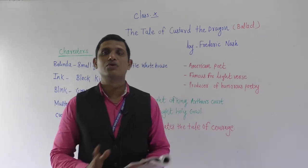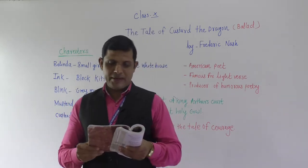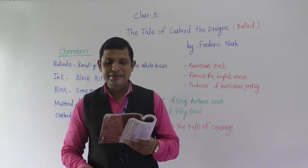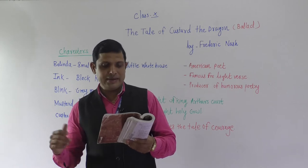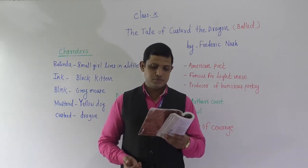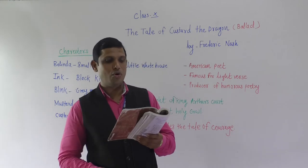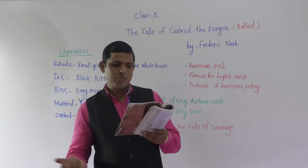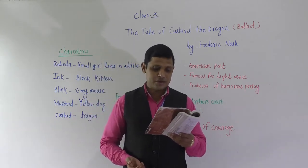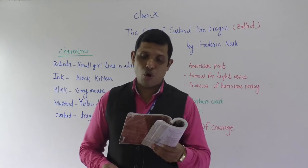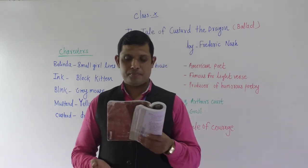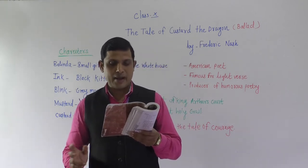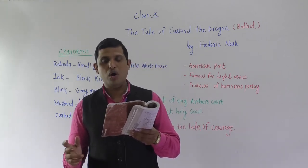Belinda lived in a little white house, with a little black kitten and a little gray mouse, and a little yellow dog and a little red wagon, and a realio trulio little pet dragon. Now the name of the little black kitten was Ink, and the little gray mouse she called him Blink.